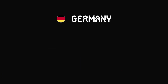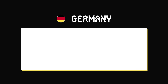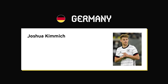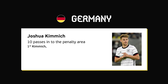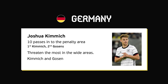Let's discuss Germany and where they will threaten England the most. A player England need to watch out for is Kimmich — he's been a dangerous player for Germany, with 10 passes into the penalty area being the most for the team, followed by Robin Gosens on six. It shows Germany's main threat comes in the wide areas, particularly from the wingbacks. Joshua Kimmich and Robin Gosens have both had the most touches in the attacking third for Germany.